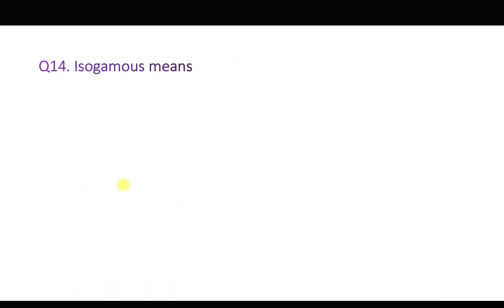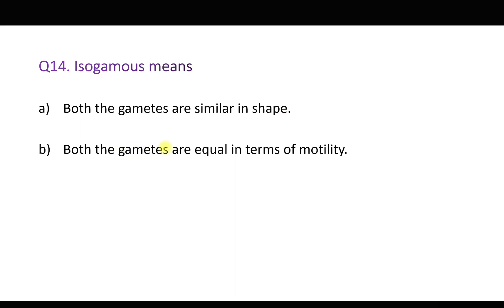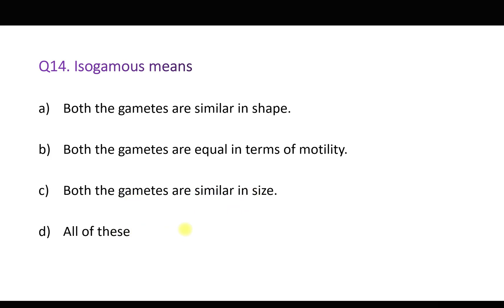Question number fourteen: Isogamous means — option A: both gametes are similar in shape; B: both gametes are equal in terms of motility; C: both gametes are similar in size; D: all of these. Isogamous means the gametes are similar in size, similar in shape, and either both motile or both non-motile. So all three options are correct, and the answer is D, all of these.